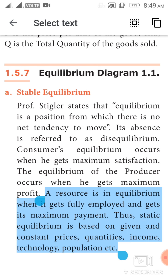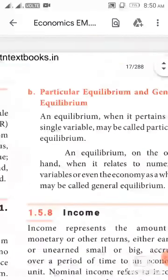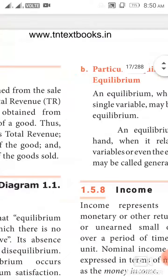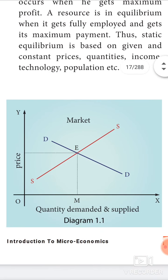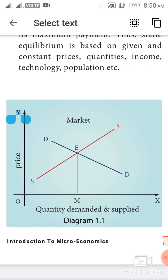Static equilibrium is based on given and constant prices, quantities, income, technology, population, etc. In the diagram, the X-axis represents quantity demanded and supplied, and the Y-axis represents price. At point E, demand and supply reach equilibrium. At that point E, at OM quantity of output, demand equals supply.